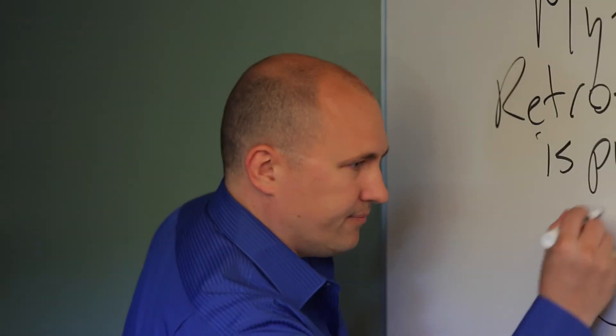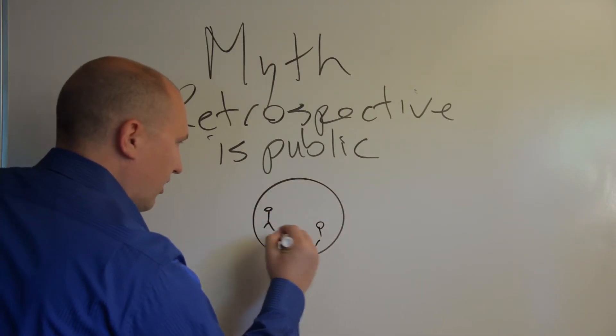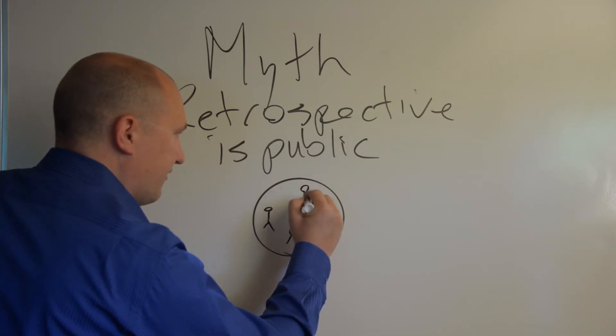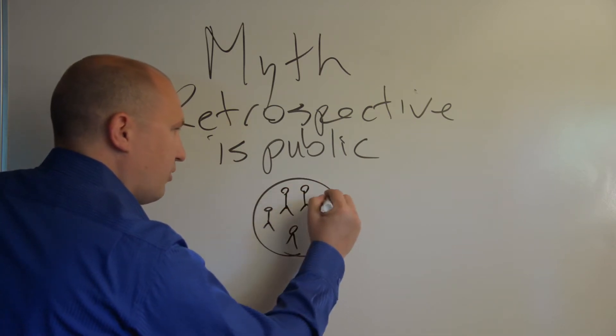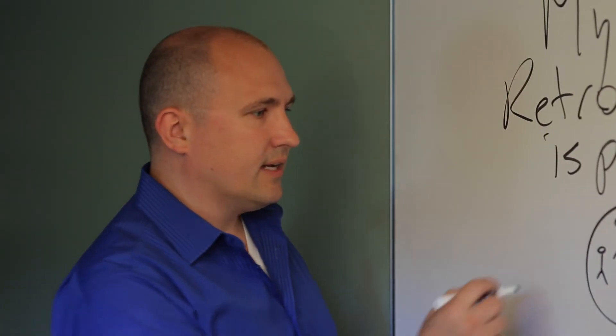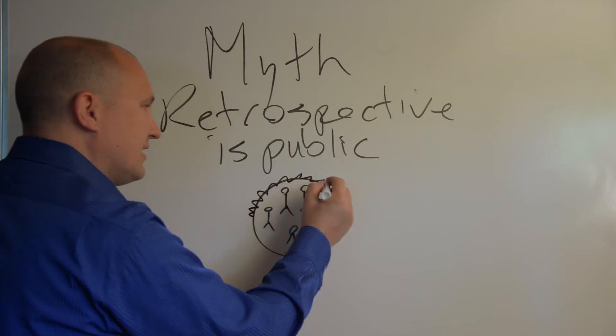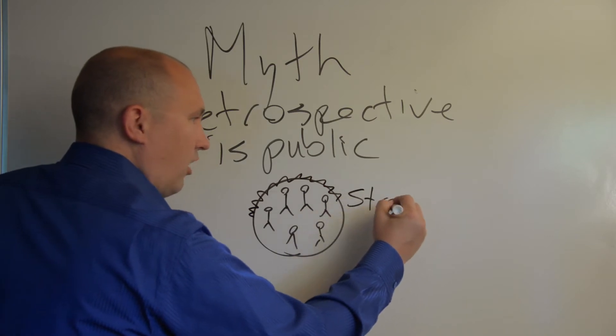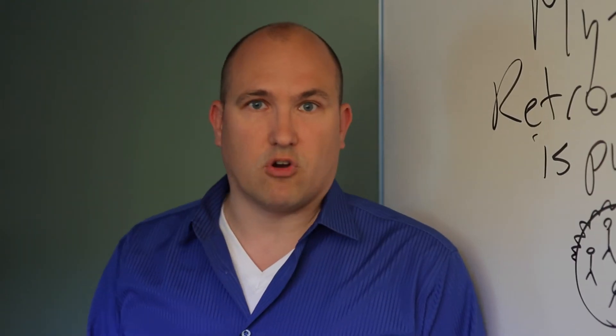Here's our team. It's got some people on it, and these people are supposed to work together really effectively. In fact, they're supposed to become a high performance team. Now in order to do that, this boundary around the team needs to be really strong. There's some very specific ways that it should be strong.